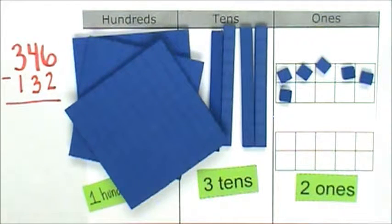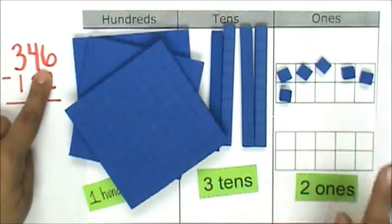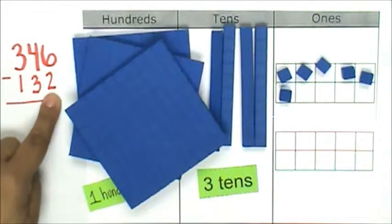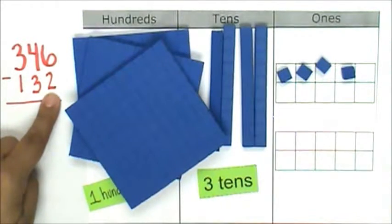Next, let's go ahead and start doing our computation. 6 ones minus 2 ones equals 4 ones.